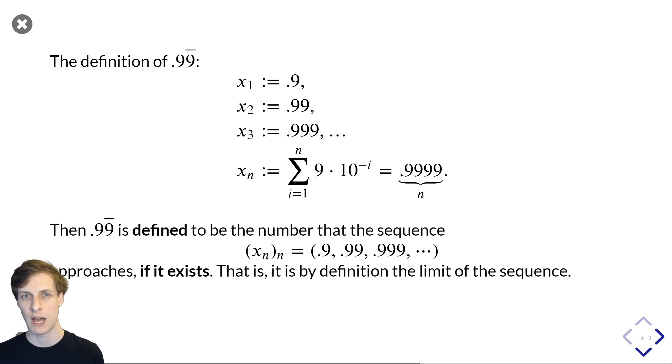So in that sense, we didn't choose the value of 0.99 repeating to be 1. We chose the definition of an infinite sum, and then from that, we were able to derive the value of 0.99 repeating.